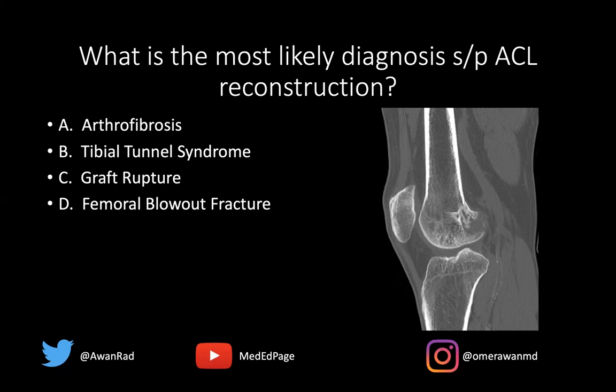With graft rupture, we typically see disruption of the graft itself. We may have marrow edema along the anterior lateral femoral condyle and the posterior lateral tibial plateau — the kissing contusions we see in a pivot shift injury — which can be suggestive of a graft rupture.